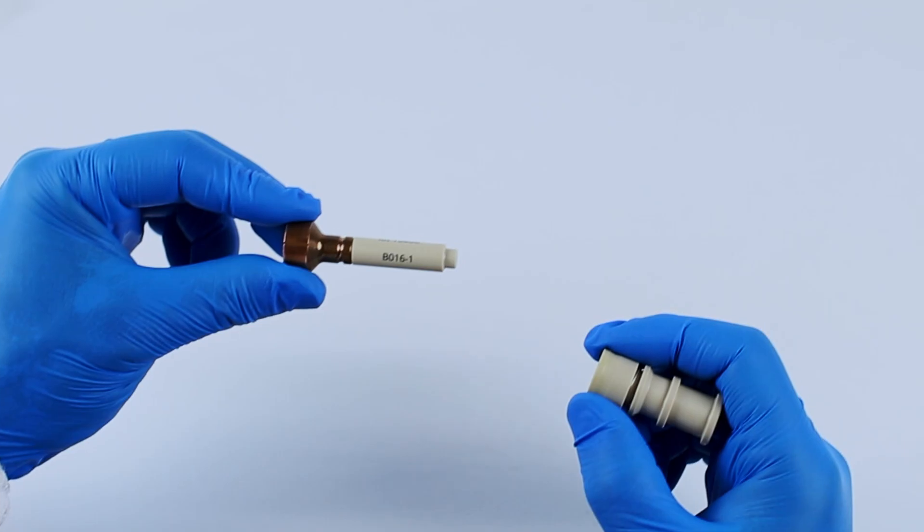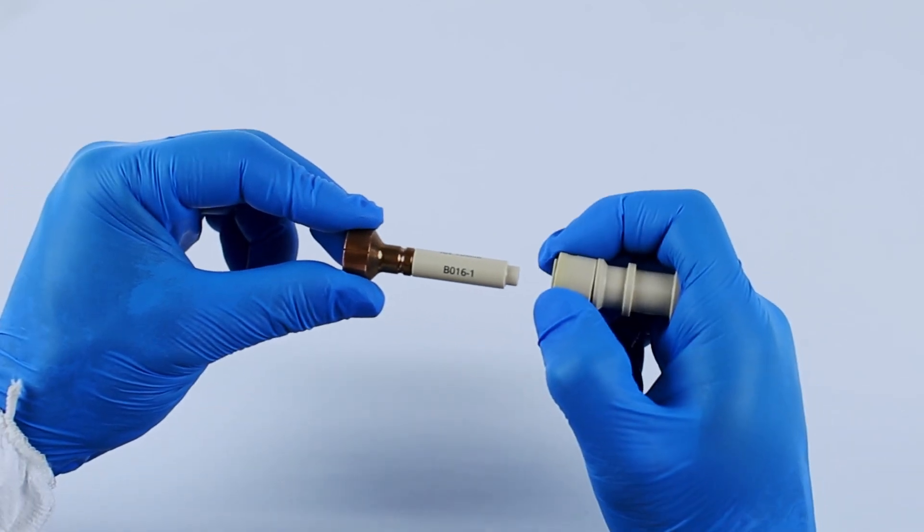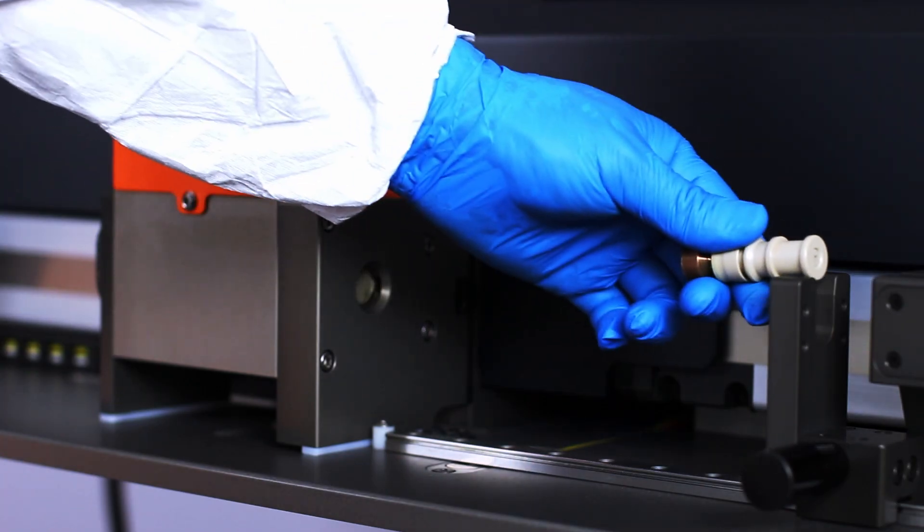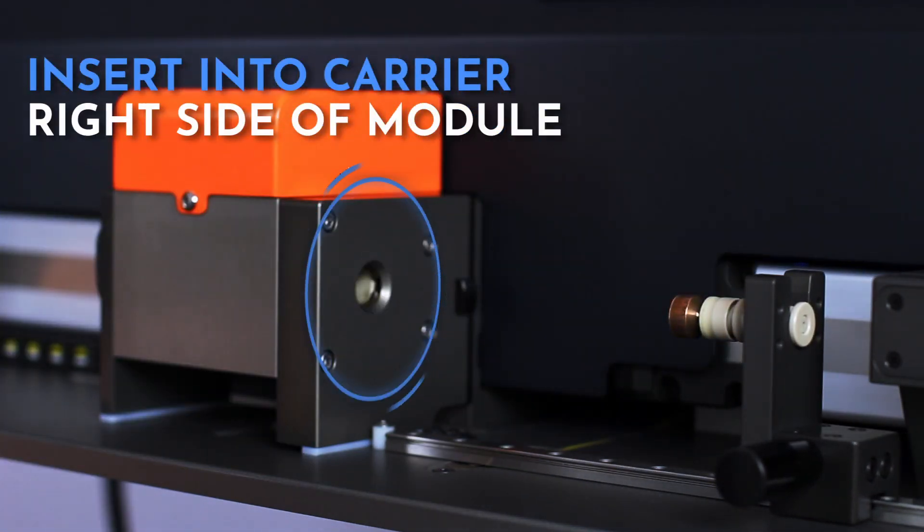To attach the Quick Connect holder to the right end plug, retract the sleeve and insert the end plug into the chuck. This assembly can then be inserted into the carrier on the right side of the module.